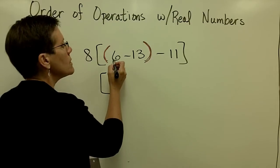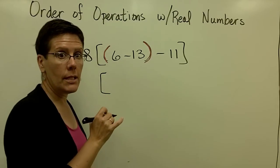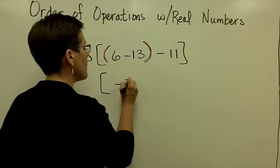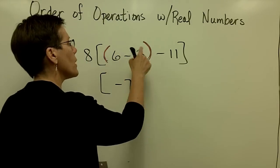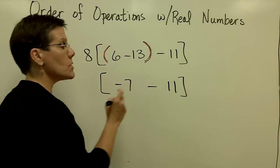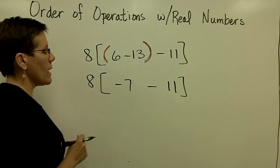Let's bring the square bracket down. 6 minus 13 is a negative 7. So I have a negative 7 there, and I can drop the red parentheses. I've done that, and I'll have to subtract the 11, and I have just the square brackets left with the 8 out in front.